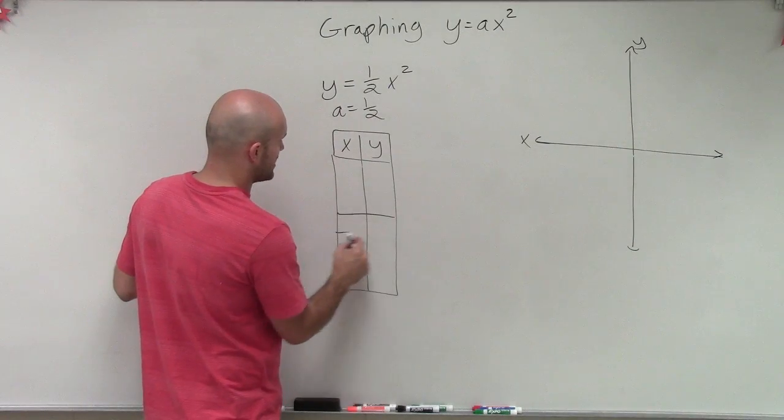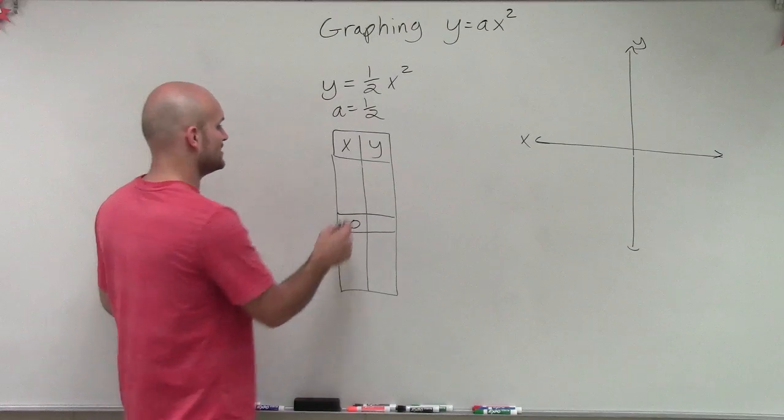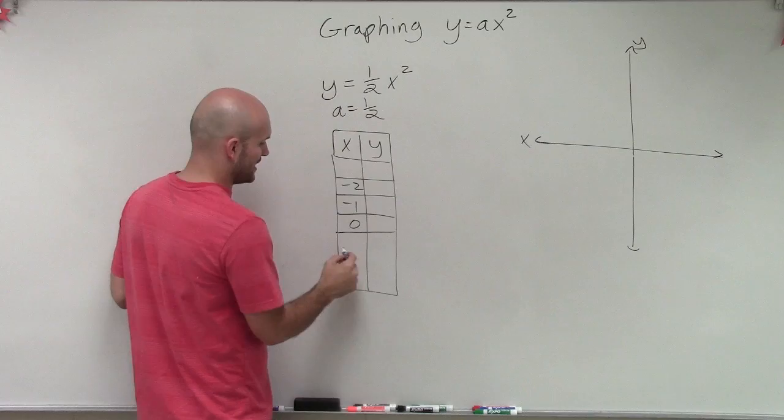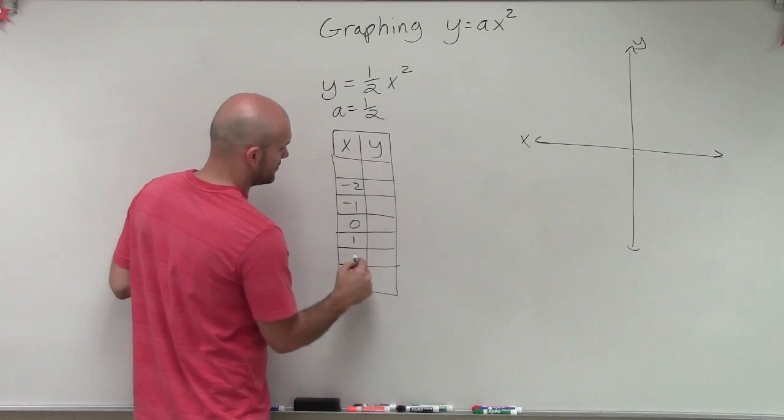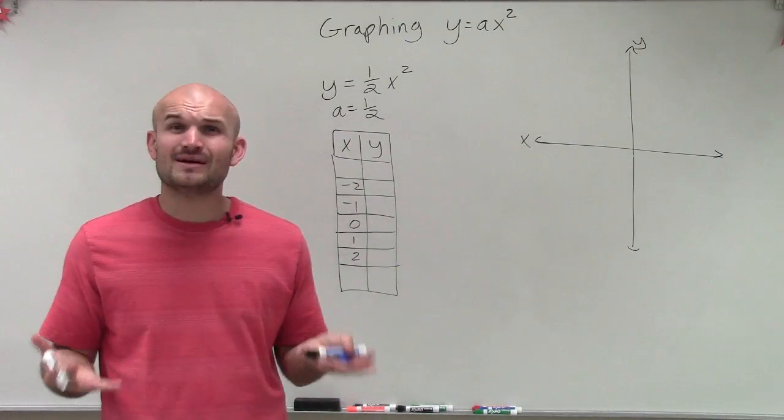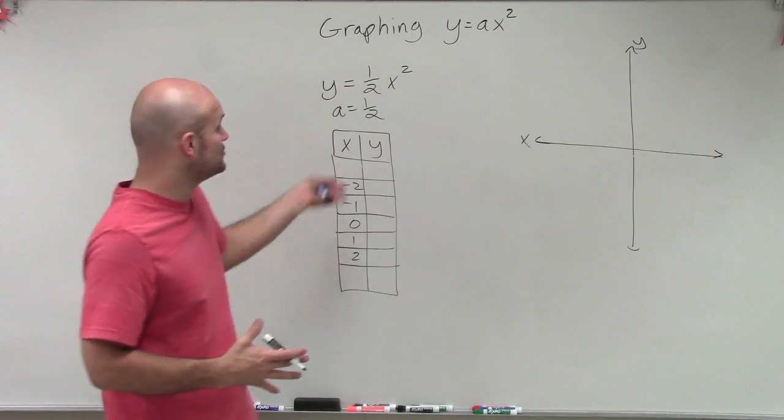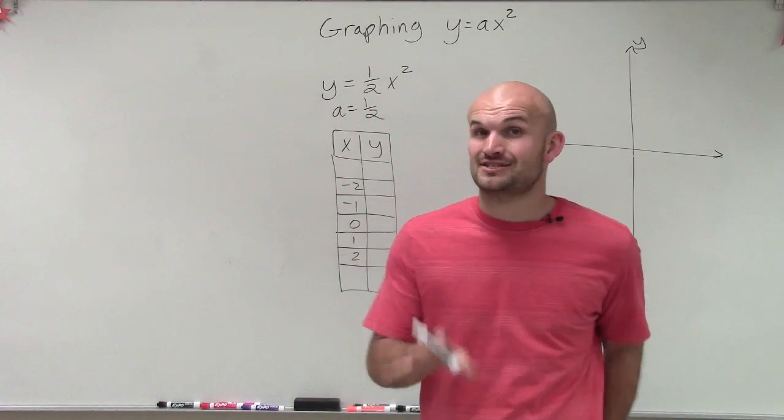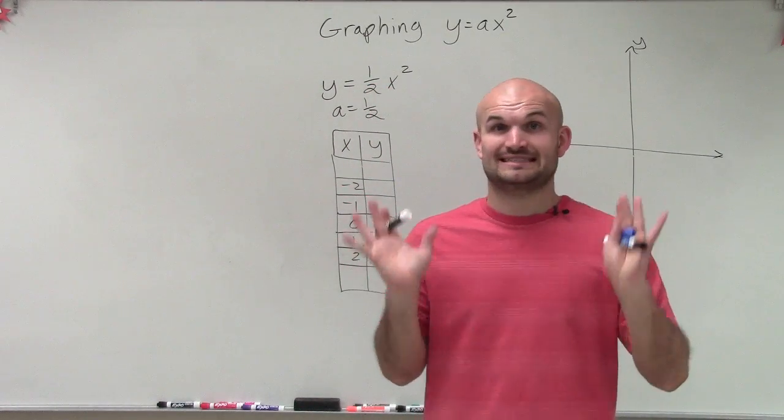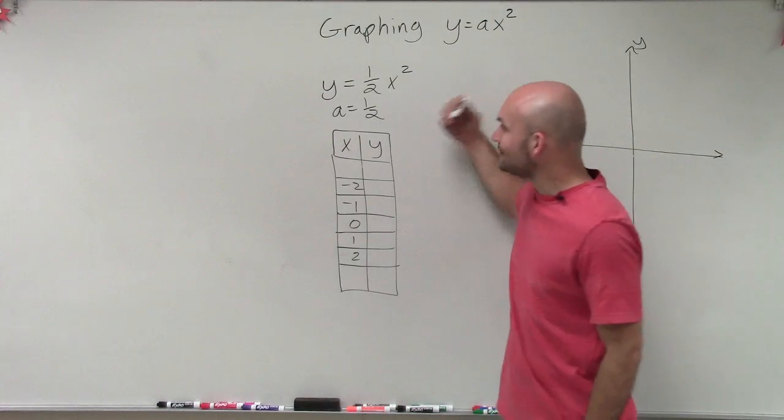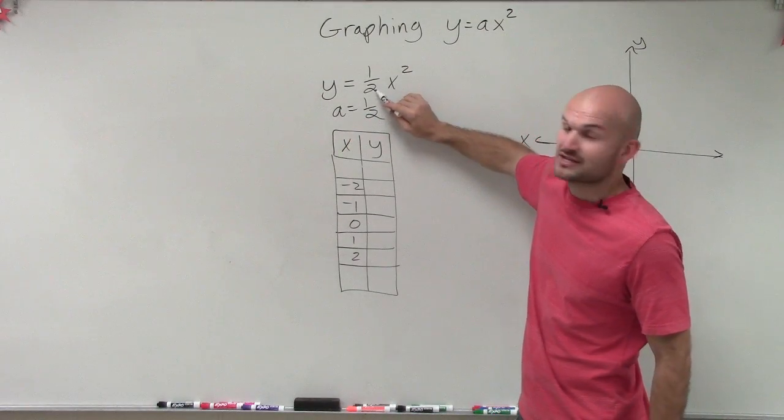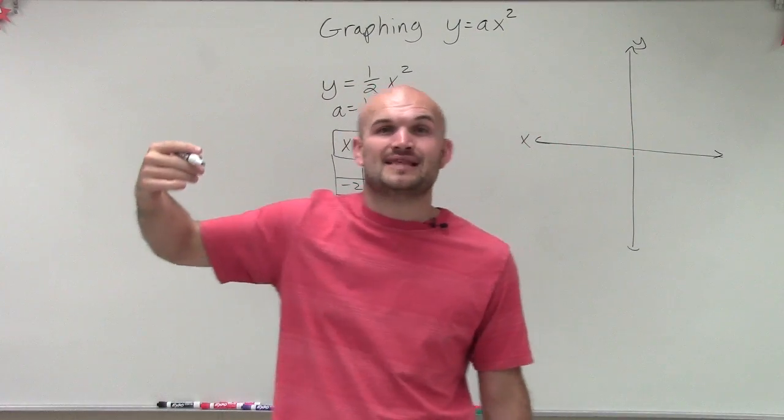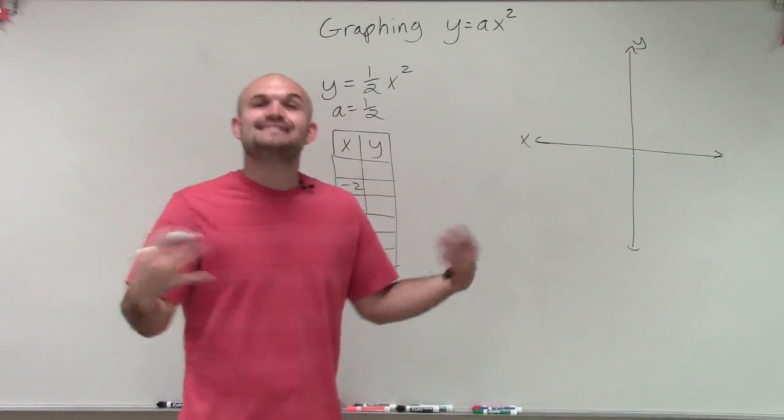We always start at zero, and then we choose two points to the left and two points to the right. Now what I've done before is I've chosen negative 1, negative 2, positive 1, positive 2. But not always are those the best points. Sometimes you might want to pick different values. When you're dealing with fractions, I recommend if I'm going to do a fraction, especially in this fraction, I'm going to look at the denominator which is 2. So therefore, I'm going to try to find values that when I square them, it will be easily divided by 2.